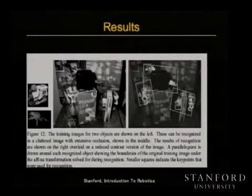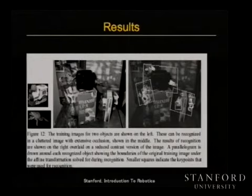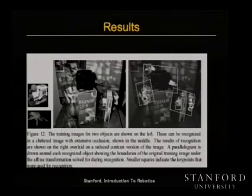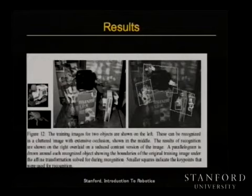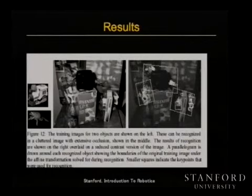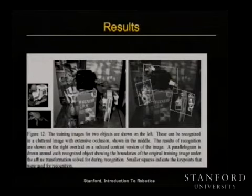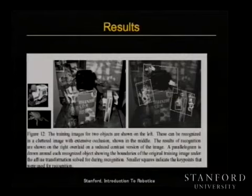Here are results from David Lowe's original paper: a scene with a toy train and a froggy. Given just the center image, even a person has to look a bit to find both objects. The system detected both, including a froggy that was almost completely hidden behind a dark black object — only its front flipper and back flipper visible. The system correctly identified one instance of the froggy even with heavy occlusion. These are fairly remarkable results considering where the field was at that time.